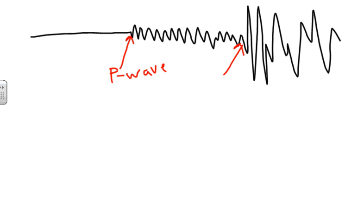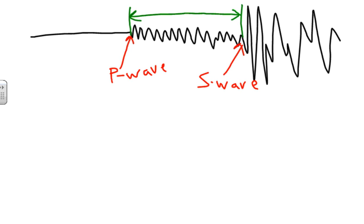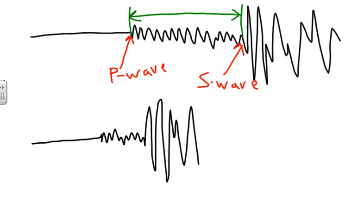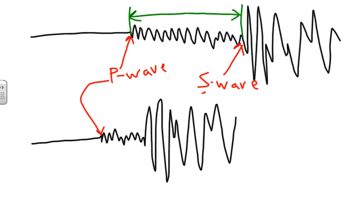On a seismogram, nothing happens, then the first shaking tells us there was an earthquake — that's the P wave arriving first. Then the second big shake is our S wave. We label the P wave arrival and the S wave arrival. The time difference between the two is what we're really concerned about, because that helps us learn where the earthquake is. A station farther from the earthquake will show a greater time difference between the P and S wave arrivals.